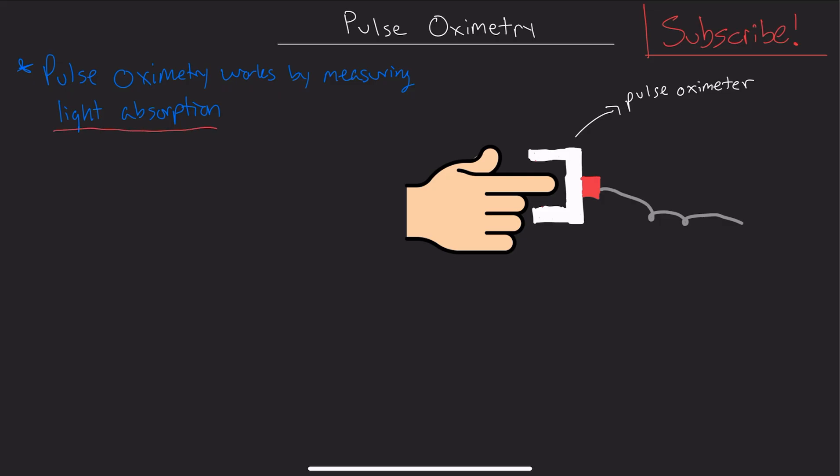How it does this is there's a probe on one side of the pulse ox and a sensor on the other. This probe is going to send two different wavelengths of light through the finger, the ear, wherever you have it connected, to the sensor.